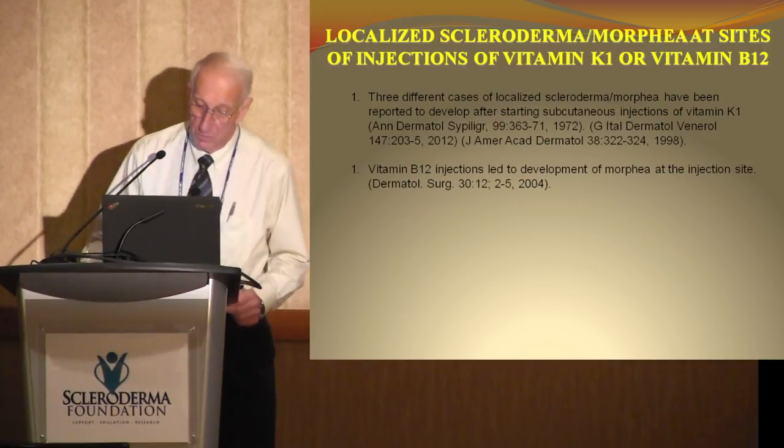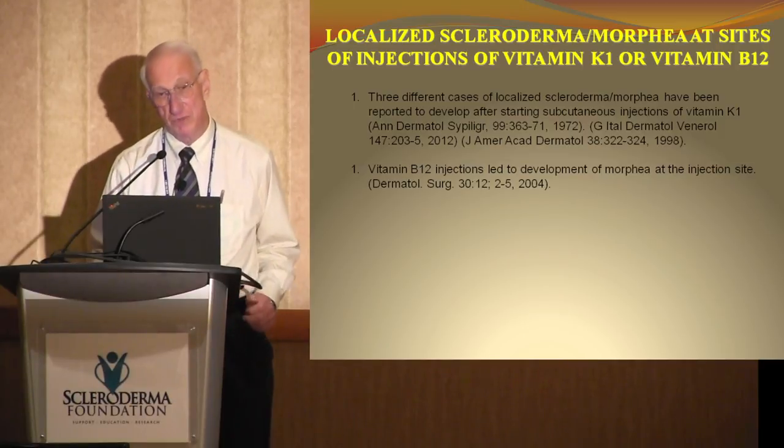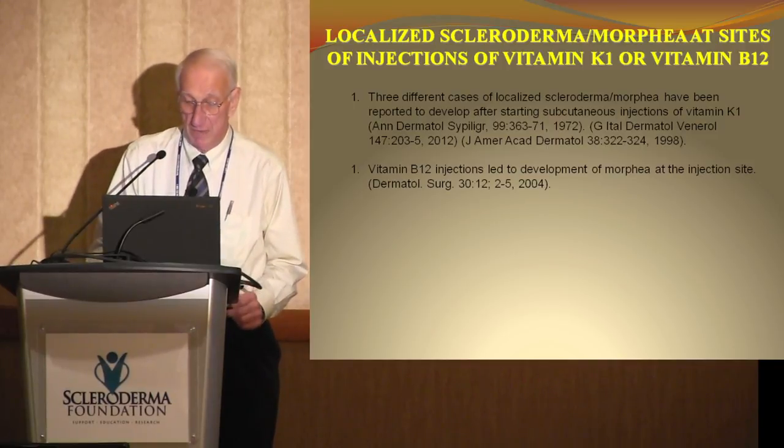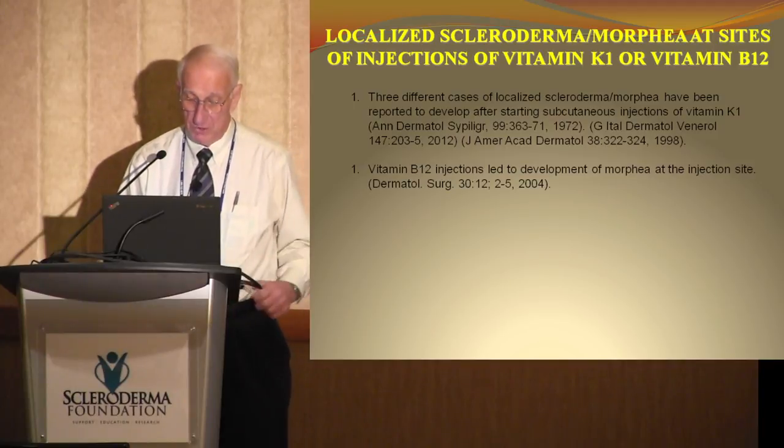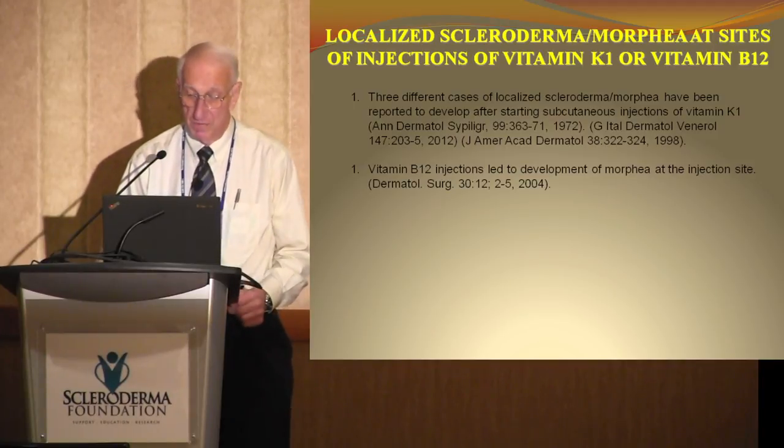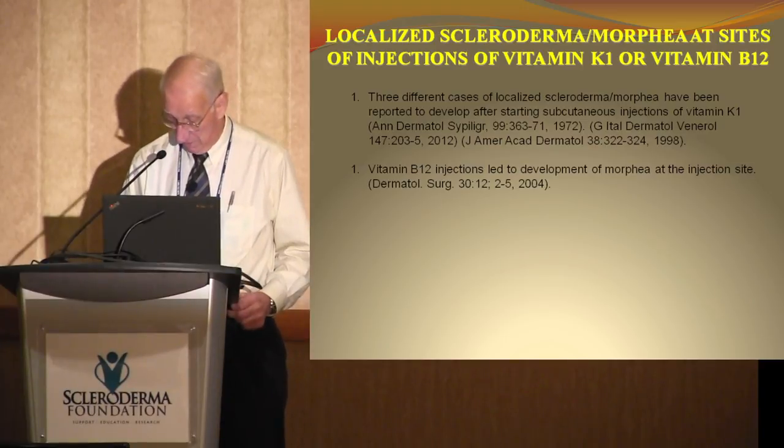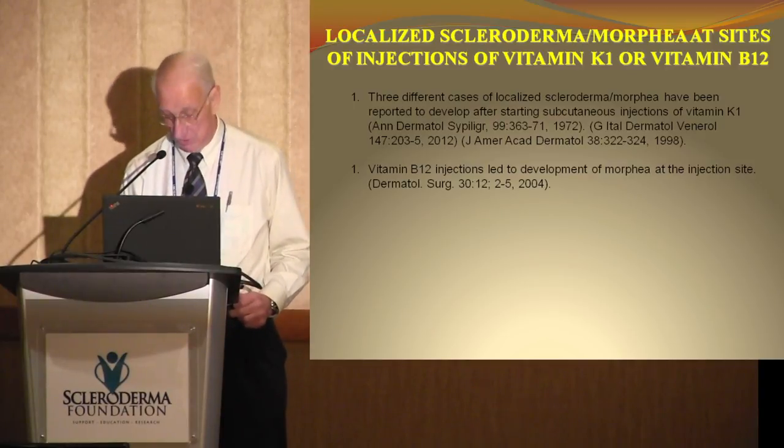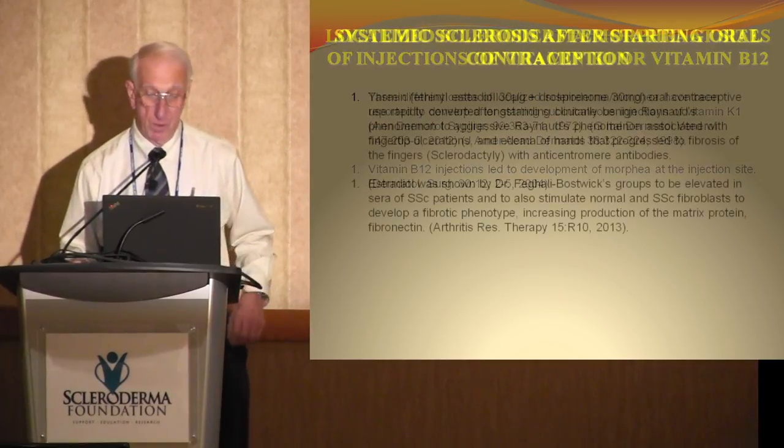There are a couple reports of localized scleroderma or morphea at the injection sites of vitamin K1 and of vitamin B12. These developed at the site of repeated injections. The K1 was reported by two different groups, so when it's done by two different groups, it lends more credibility to that as being a true observation.